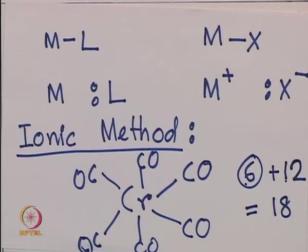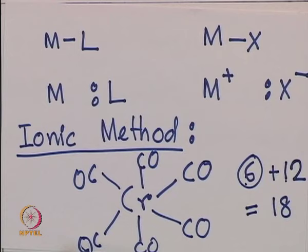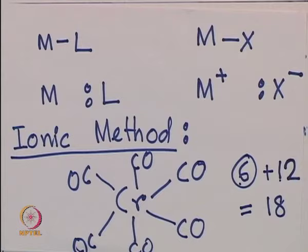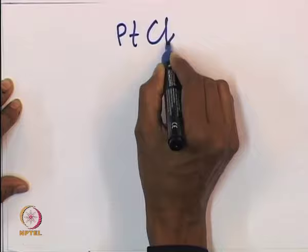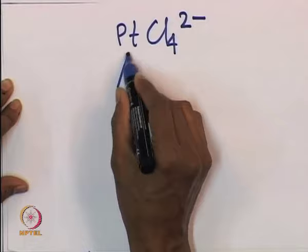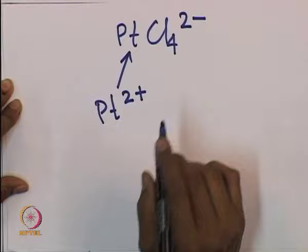As shown, the chromium hexacarbonyl complex has chromium with 6 electrons and 6 carbon monoxides each giving 2 electrons, giving 6 plus 12 — total 18 electrons. Let us take another example: platinum tetrachloride 2-minus. The oxidation state of platinum is Pt²⁺, and you can count the electrons. Osmium, iridium, platinum — overall 10 electrons for platinum.